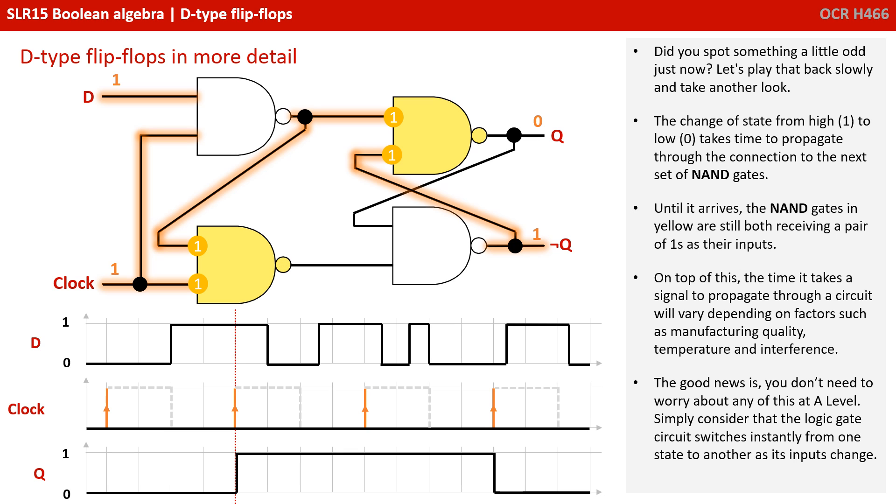Did you spot something a little odd just now? Let's play that back really slowly and take another look. The change of state from high one to low zero takes time to propagate through the connection to the next set of NAND gates. Until it arrives, the NAND gates in yellow are still both receiving a pair of ones as their input.